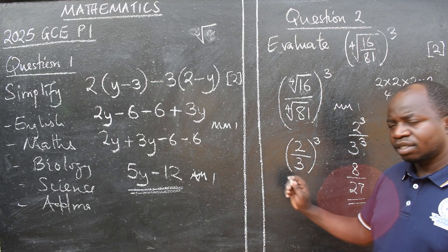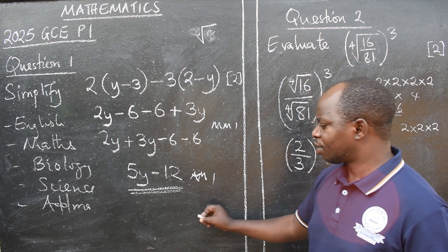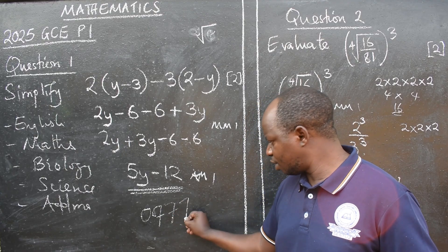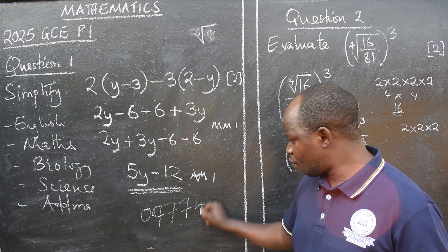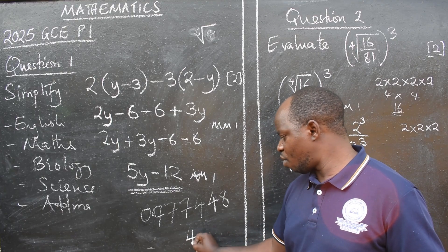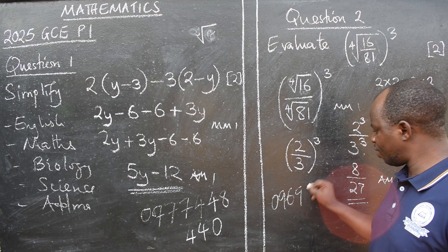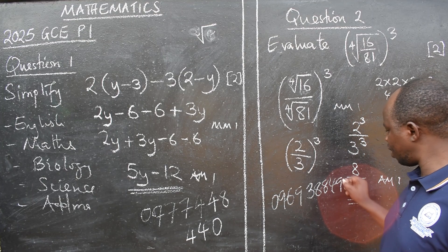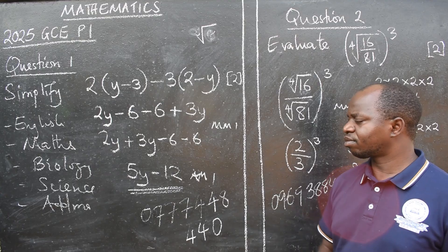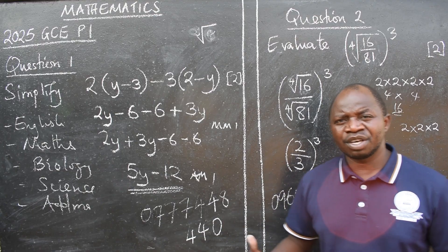I said you can text, WhatsApp, or call. You can call me on 0777 448 440 or 0969 38 84 93. You give me a call, a text, WhatsApp. I will be able to give you details. We have started. Lessons have started. These are reliable lessons.